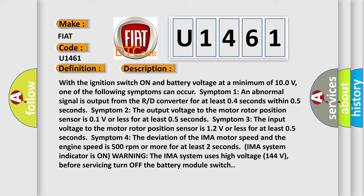Symptom 3: The input voltage to the motor rotor position sensor is 1.2 volts or less for at least 0.5 seconds. Symptom 4: The deviation of the IMA motor speed and the engine speed is 500 revolutions per minute or more for at least 2 seconds. The IMA system indicator warning light is on.